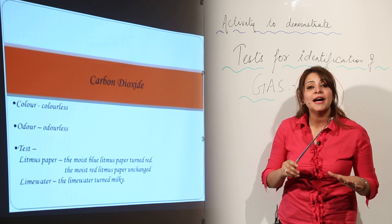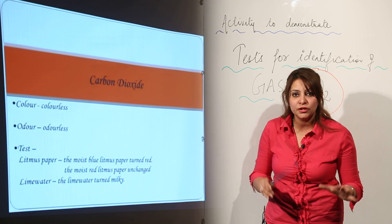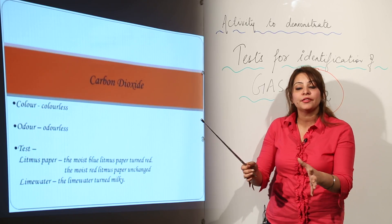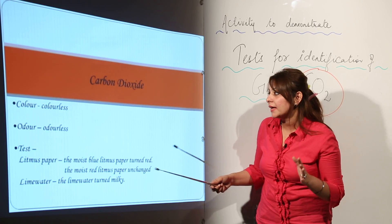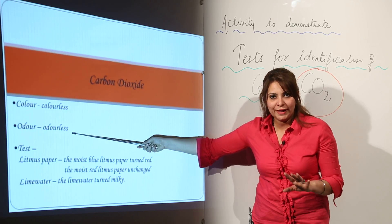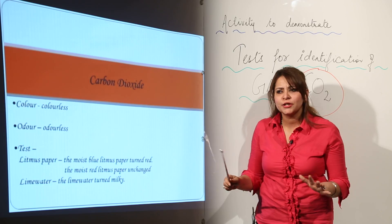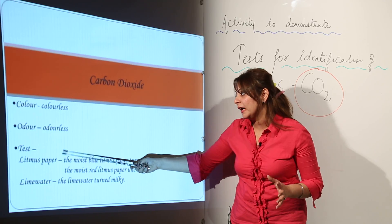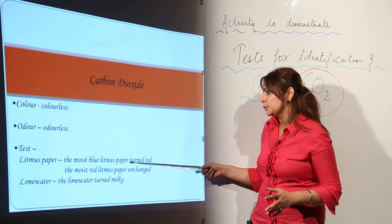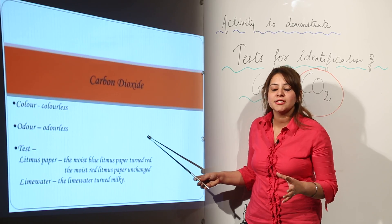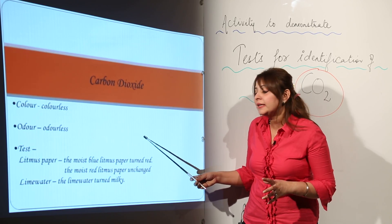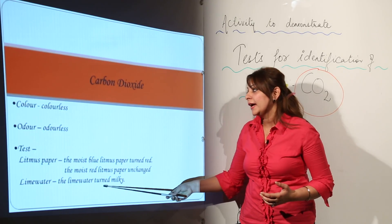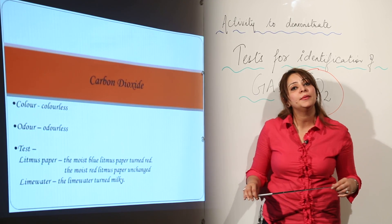Let's sum up the identification tests for carbon dioxide. It is a colorless gas — you don't see any colored fumes rising up. It is also odorless — no suffocating, pungent, or pleasant smell. It turns moist blue litmus paper red because it gives rise to the weak acid carbonic acid, and acids turn blue litmus red. It also turns lime water milky.